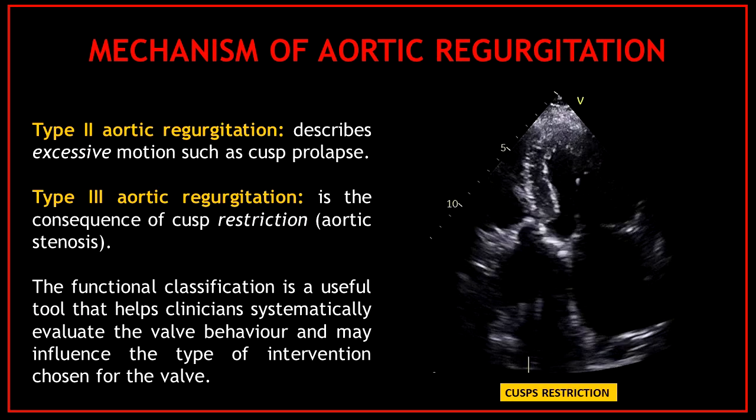Type 2 aortic regurgitation describes excessive motion such as cusp prolapse. And type 3 aortic regurgitation is the consequence of cusp restriction such as aortic stenosis. The functional classification is a useful tool that helps clinicians systematically evaluate valve behavior and may influence the type of intervention chosen for the valve.